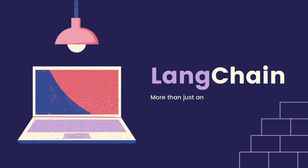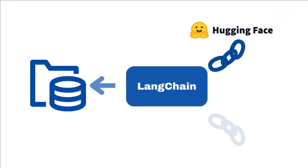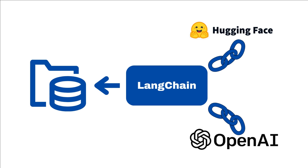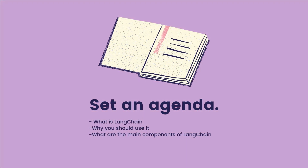Welcome to this tutorial on how to use the LangChain framework of Python to build powerful language model applications. LangChain is a framework that allows you to connect language models to other sources of data and enable them to interact with your environment. In this tutorial we will cover the following topics: What is LangChain? Why you should use it? And what are the main components of LangChain? Let's get started.